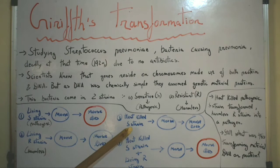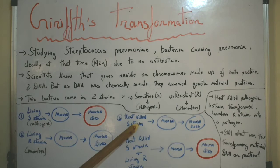In the third experiment, he took the heat-killed S strain — the pathogenic strain — and heat-killed it, so there were no living cells present in this culture. He then injected it into a mouse, and as expected, since there were no living cells, the mouse lived.